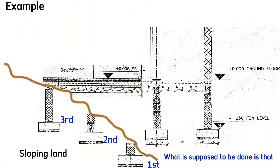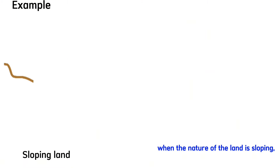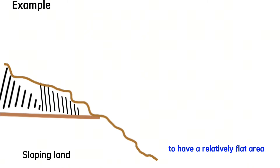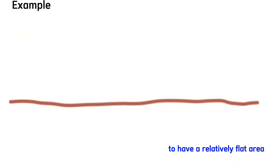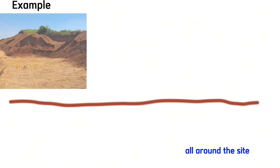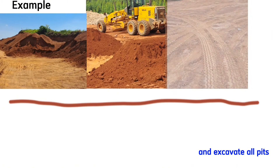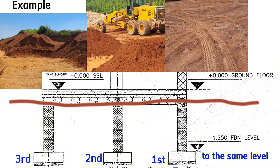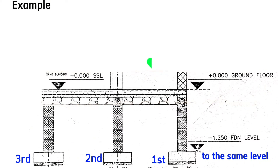What is supposed to be done is that when the nature of the land is sloping, cut and dispose of this part to have a relatively flat area all around the site, and excavate all pits around the site to the same level. This way, the foundation will be stable enough since it is on the same level.